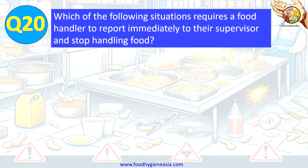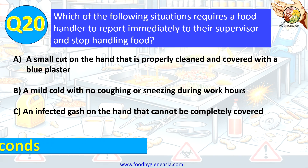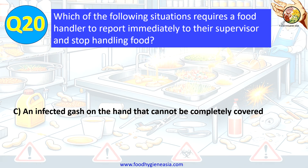Question 20. Which of the following situations requires a food handler to report immediately to their supervisor and stop handling food? A. A small cut on the hand that is properly cleaned and covered with a blue plaster. B. A mild cold with no coughing or sneezing during work hours. C. An infected gash on the hand that cannot be completely covered. The correct answer is C. An infected gash on the hand that cannot be completely covered.